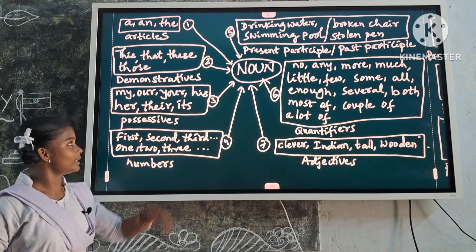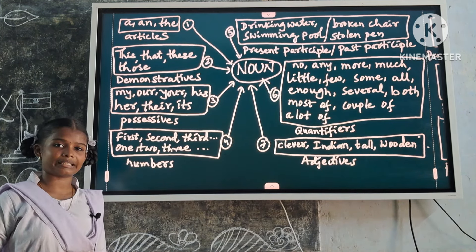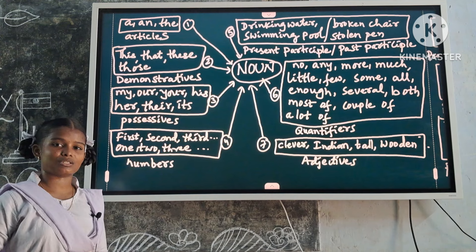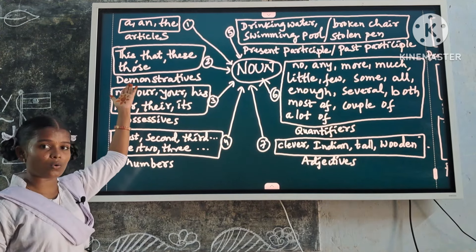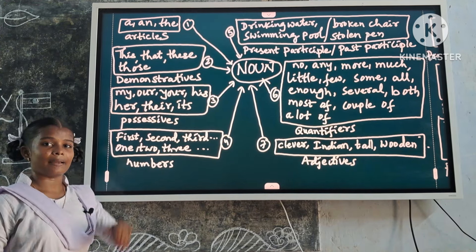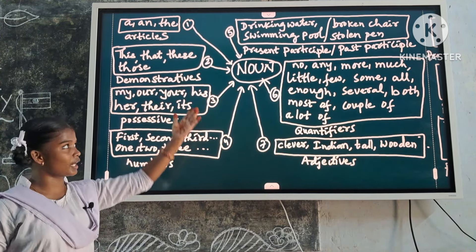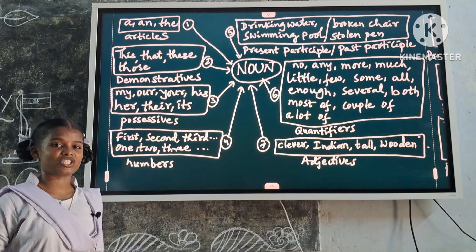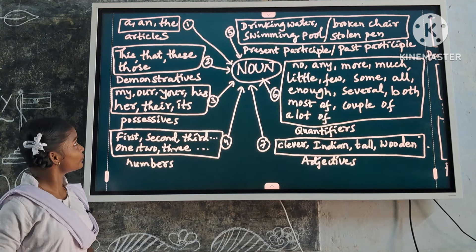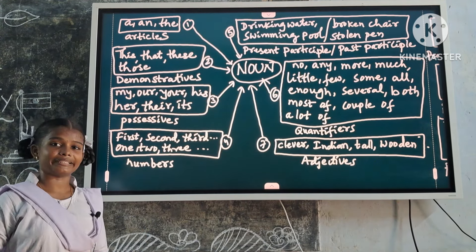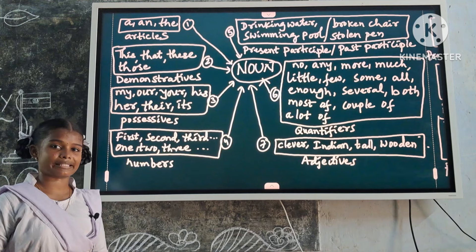Next one: demonstratives — this, that, these, those. These are noun modifiers because they describe the noun. Examples: this boy, that boy, these boys, those boys.